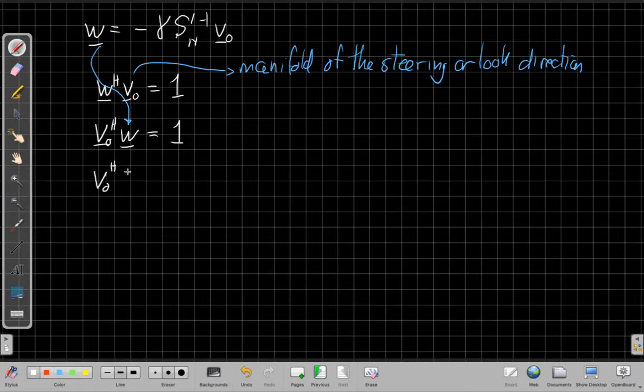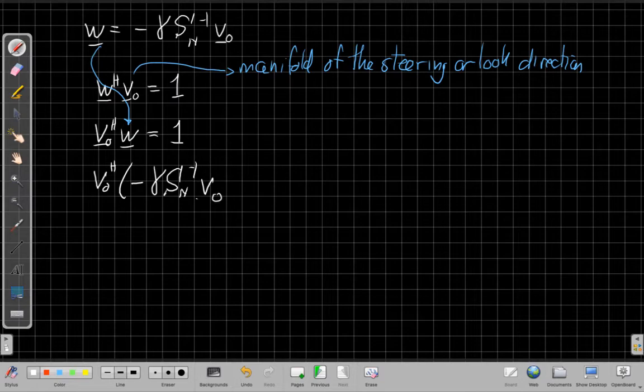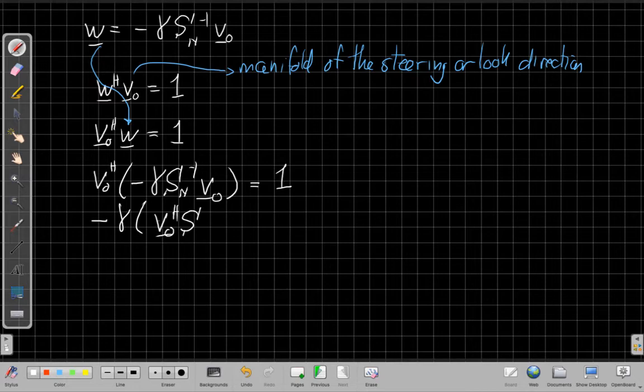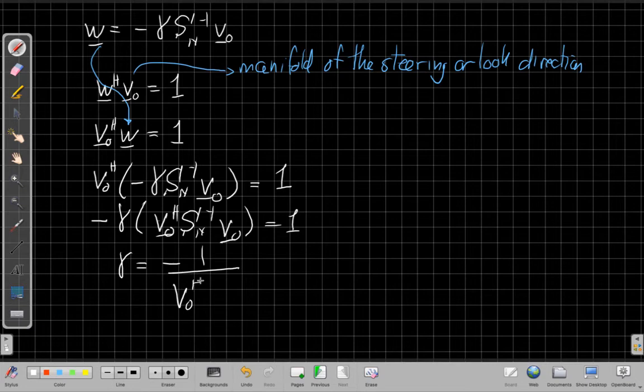So I can now, well, again, this is a scalar, so I can pull it out in front, and I get minus gamma V naught Hermitian SN inverse V naught equals 1. So now I can solve for gamma, this scalar, because this thing here is a quadratic form, which means it's a scalar too. So I can just divide both sides by this number, well, minus this number, and I'll get the gamma is equal to minus 1 over V naught Hermitian SN inverse V naught.